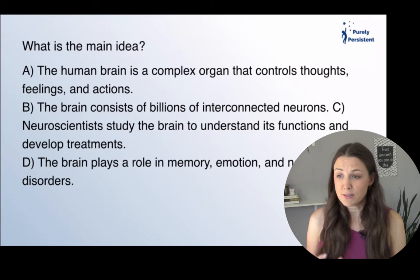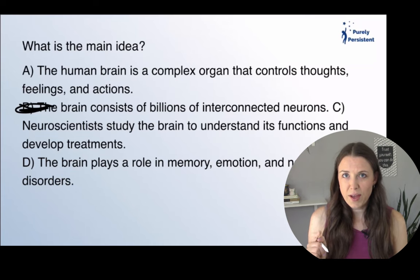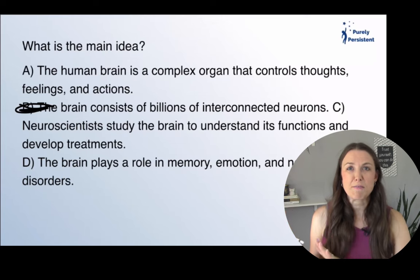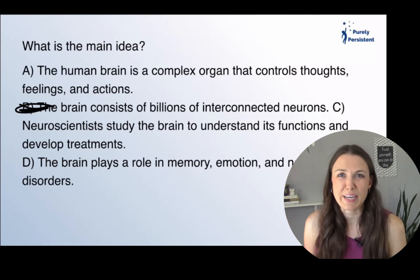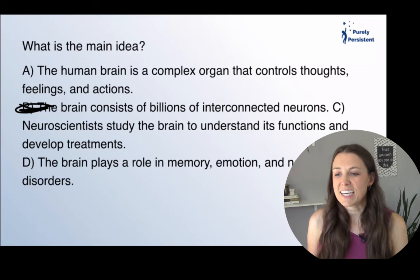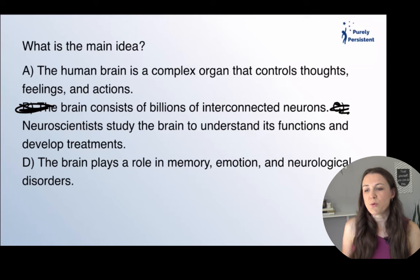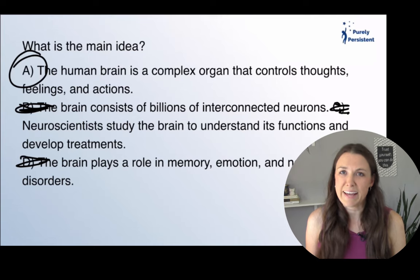'The human brain is a complex organ that controls thoughts, feelings, and actions' — yes, that's what it's about. 'The brain consists of billions of interconnected neurons' — yes, but that's a supporting detail. 'Neuroscientists study the brain to understand its function and develop treatments' — that's not the main idea of this passage. 'The brain plays a role in memory, emotions, and neurological disorders' — yes, but it's really A: it's a complex organ that controls thoughts, feelings, and actions.